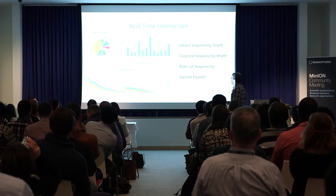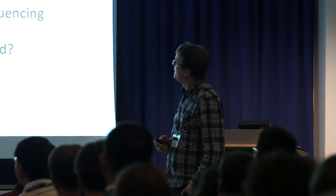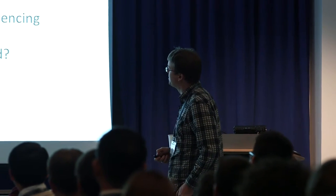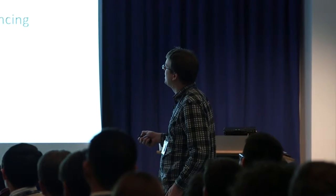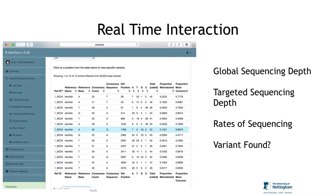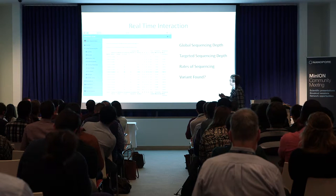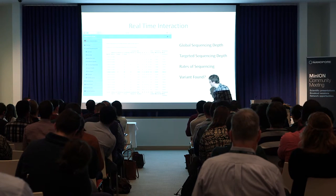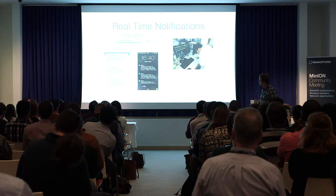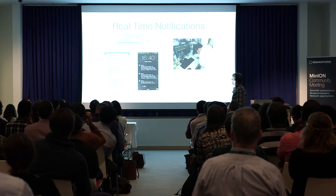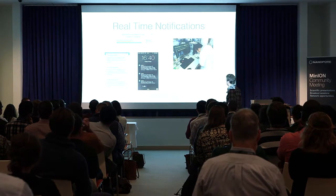What can you use Minotaur to do in real-time? There are all sorts of things you might want to look at: the amount of sequencing depth, targeted sequencing, different levels of barcodes, rates of sequencing, or even whether you've found a specific variant in your sample. But how do you get away from having to look at a website? You make the website tweet you when you've reached a particular depth of coverage. That's what Minotaur does — it sends you messages when certain conditions have been reached.